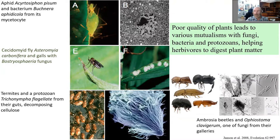In some cases, you can see protozoa in the guts of termites decomposing cellulose for them. Likewise, Ambrosia bark beetles have a similar relationship with fungi - they grow fungi in galleries within trees and feed on the fungi rather than on the wood itself.